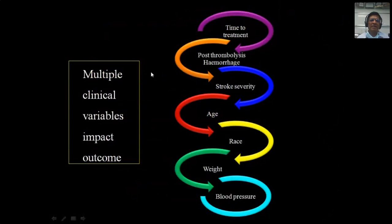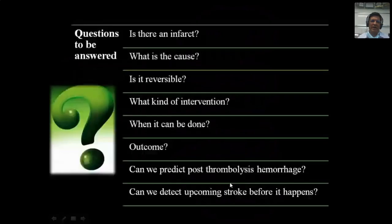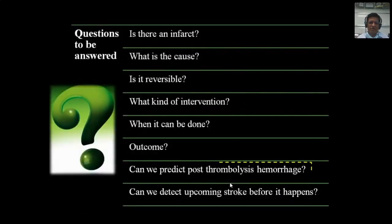There are several other clinical variables which impact the eventual outcome of a patient with stroke: time to treatment, post-thrombolysis hemorrhage on imaging, severity of stroke, age of the patient, race, weight, blood pressure, and several other comorbidities. All of these determine the final outcome.